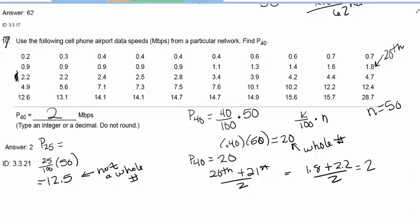Okay. So when I got a whole number, I took that one and the next one, and I averaged it. If I don't get a whole number, then I go to the next, which would be the 13th.